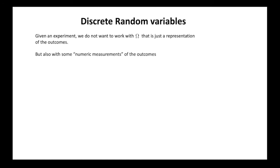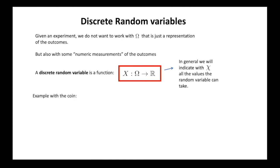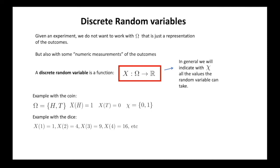Often, given an experiment, we don't want to work with omega — a formal representation of the outcomes — but we want to work with numbers, which are measures coming from our experiment, to be able to manipulate them and perform mathematical operations. For this reason, we introduce the notion of a real random variable, which is every function that goes from omega to the real numbers. We call the set of values that our random variable can take the sample space. For the coin, we could use a function that maps the outcome head to 1 and tail to 0. For the dice, we could consider a function which maps each number to its square.